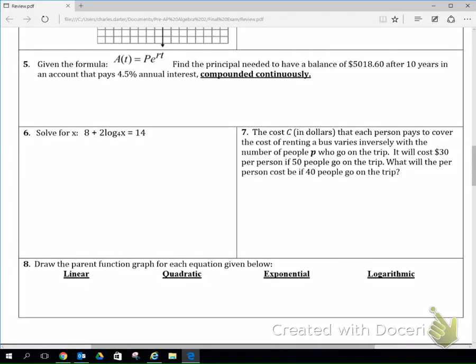All right, so in the second part of the video we're going to go over five, six, seven, and eight. Number five gives us the equation, tells us it's P*e^(rt), it's also bolded and underlined that it's compounded continuously. It asks us to find the principal amount that we deposited if we want to have a balance of around five thousand dollars after ten years in an account that pays 4.5% APR.